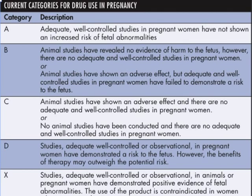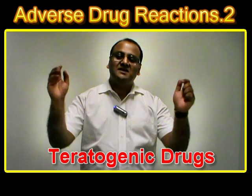Category X drugs are the most teratogenic agents. Drugs in this category include anti-acne products like isotretinoin and hormones like estrogen. If you give these drugs there will almost certainly be some defect in the child, so you must ask about pregnancy and fertility before prescribing these agents. The classification goes from A to X in an increasing manner of teratogenicity; X drugs are the most teratogenic and A drugs are the safest to prescribe in pregnancy.